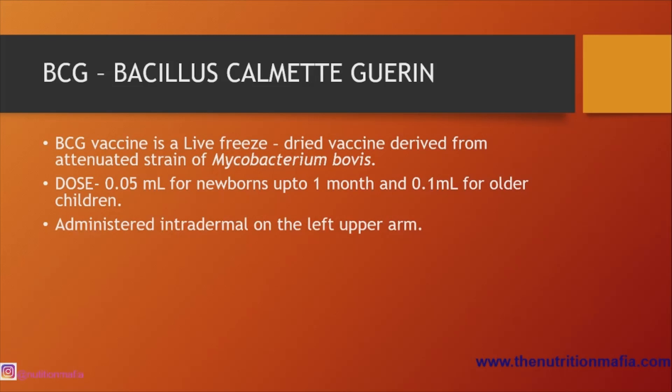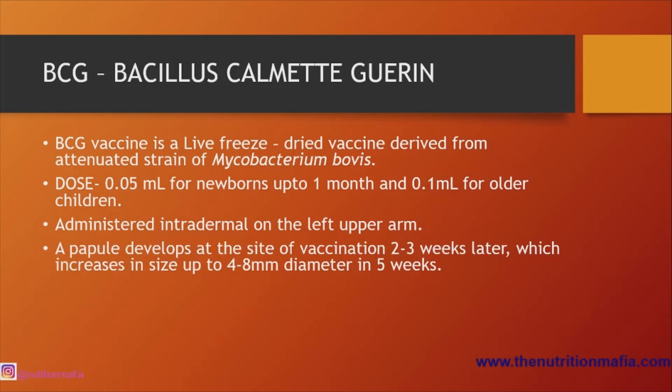It is administered intradermally on the left upper arm. A papule develops at the site of vaccination two to three weeks later, which increases in size up to four to eight millimeters in diameter within five weeks. What to do if a scar does not exist? The answer is given at the end of the video, so keep watching.